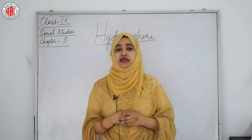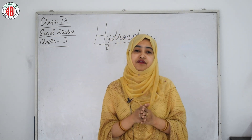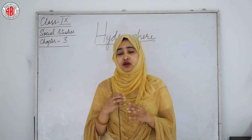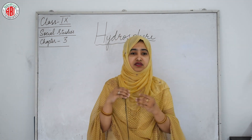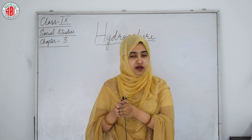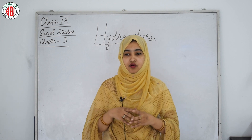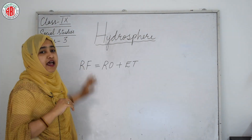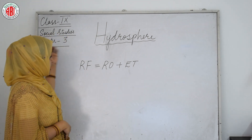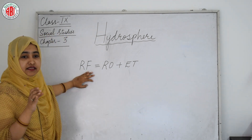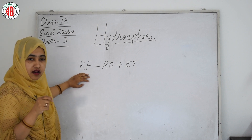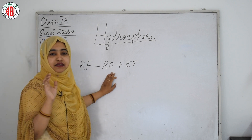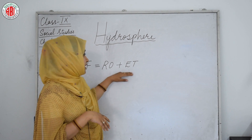The hydrological cycle is a circulation of water in different forms — liquid, solid, and gaseous phases. It also refers to the continuous exchange of water between the oceans, atmosphere, land surface, subsurface, and all living organisms. The hydrological cycle is sometimes expressed as RF, RO, and ET, where RF is rainfall (including all types of precipitation), RO is runoff, and ET is evapotranspiration.